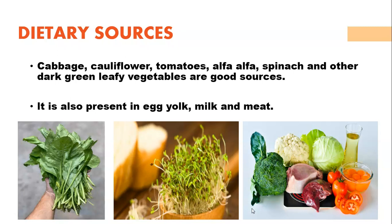Dietary sources of Vitamin K include cabbages, cauliflower, tomatoes, alfalfa, spinach, and other dark green leafy vegetables — you can see spinach on the left-hand corner and alfalfa in the middle. It is also present in egg yolk, milk, and meat.